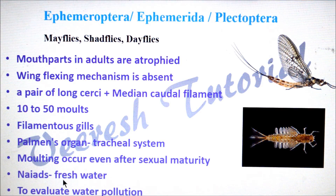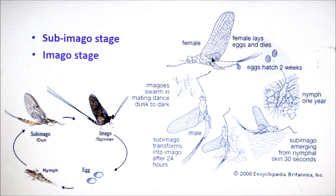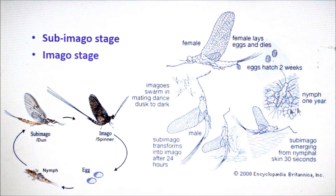Niads live in fresh water, which is why they are used in the evaluation of water pollution. If you look at the life cycle of mayflies, the female lays eggs in fresh water. Eggs hatch within 2 weeks and the niad lives for 1 year, and then the adult emerges from the last larval instar.